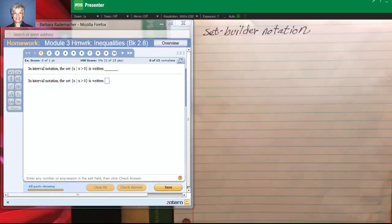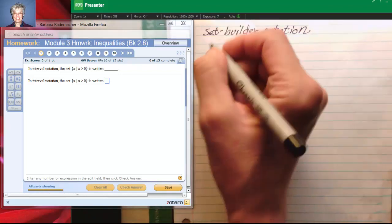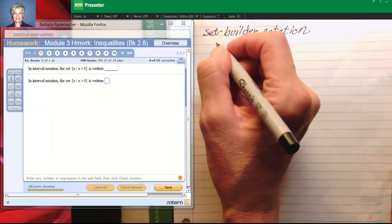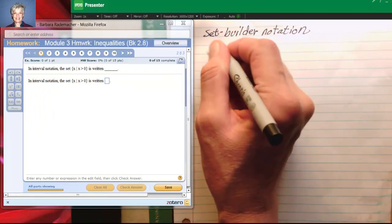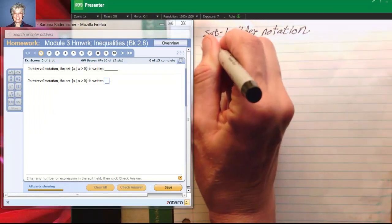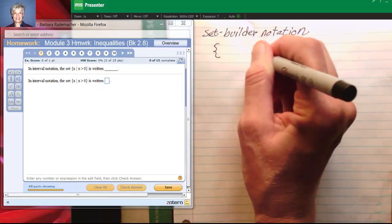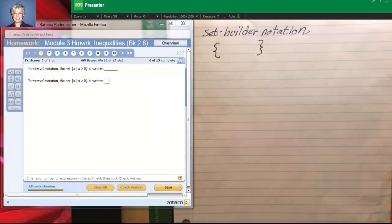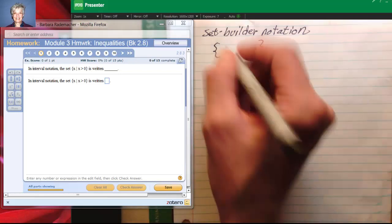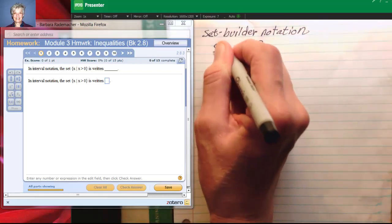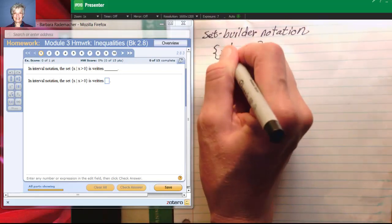What set-builder notation is, is we're talking about a set of numbers. You can tell you're dealing with a set anytime you have what are called braces. Braces tell you you're dealing with a set and what this says is all the numbers on the number line such that.